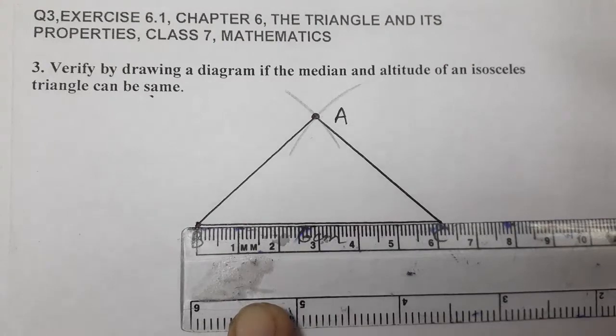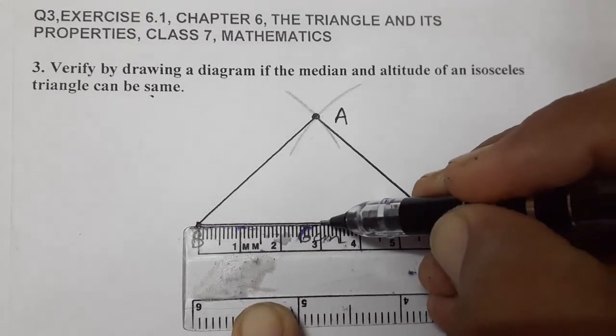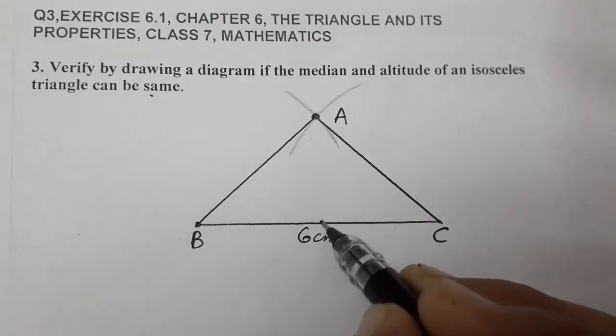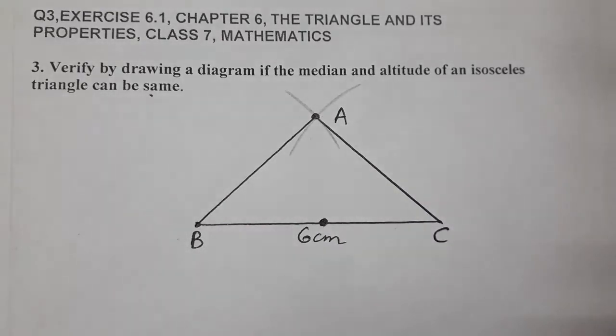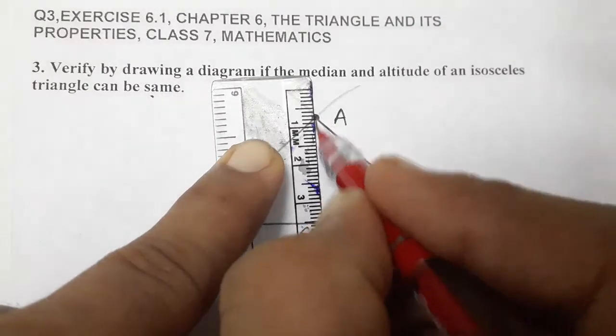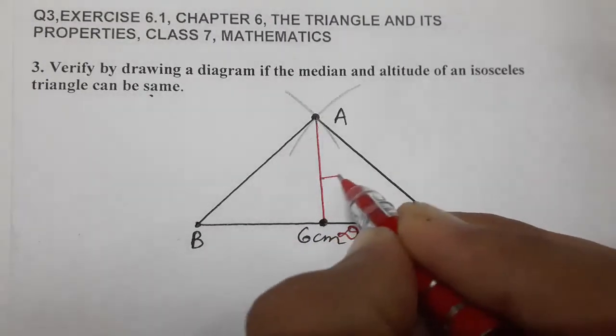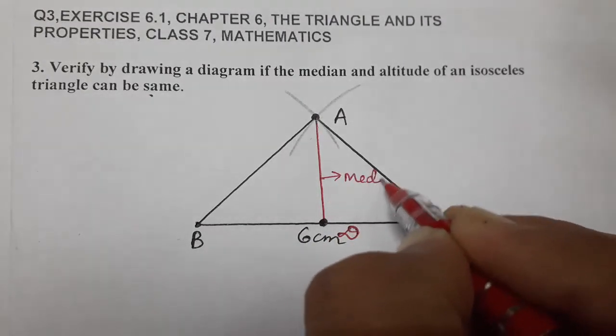What is half of 6? 3 centimeters. So this is the median. So let's make the median. This is median AD. Now we have to verify that median and altitude is same for isosceles triangle.